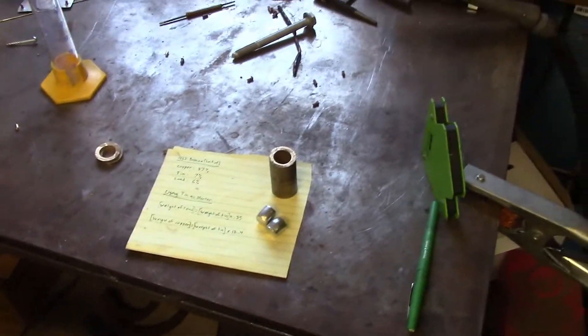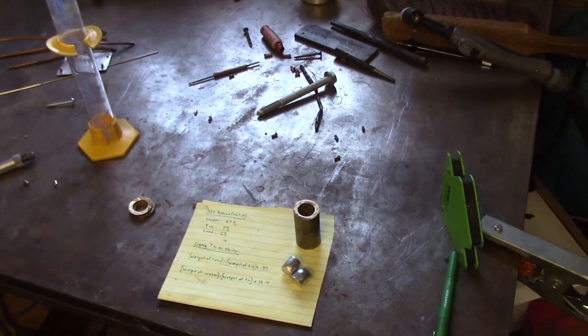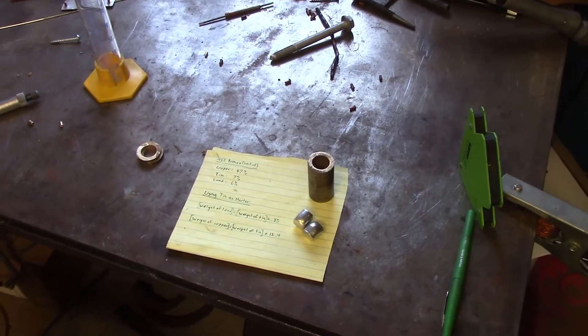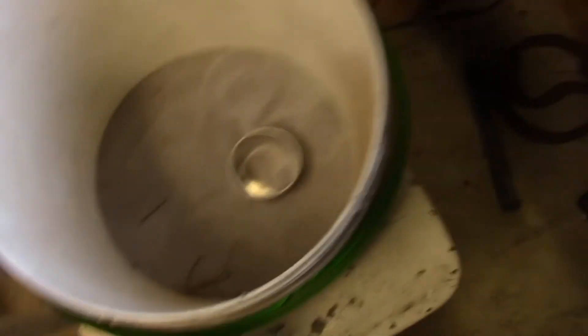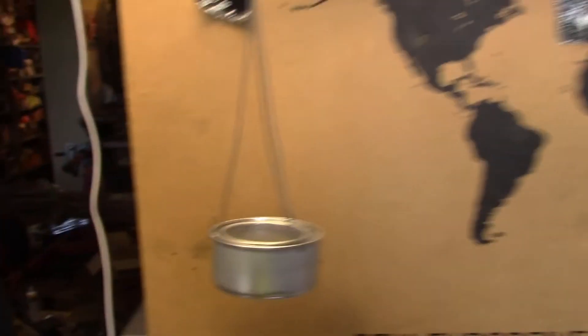Now the easiest way to measure out all these components would be a digital scale, but turns out the only one I have is broken. But I do have a graduated cylinder, a bucket of sand, and this equal beam balance I made from some scrap and cat food cans.